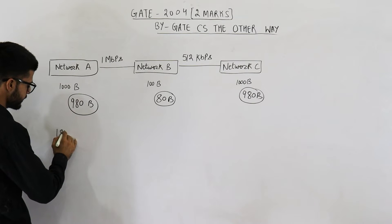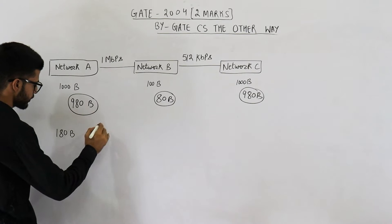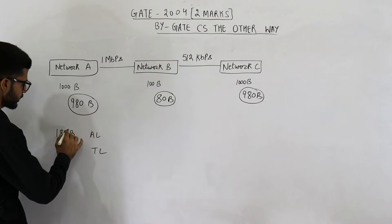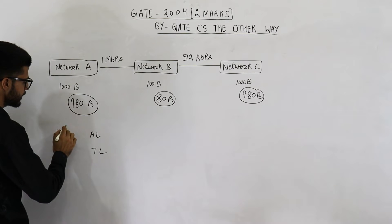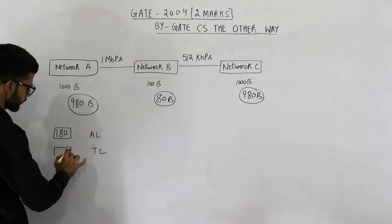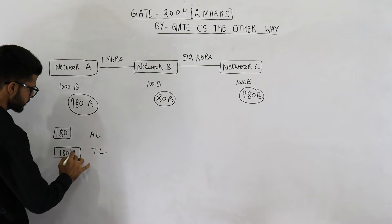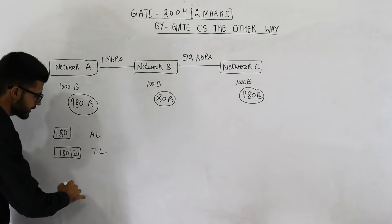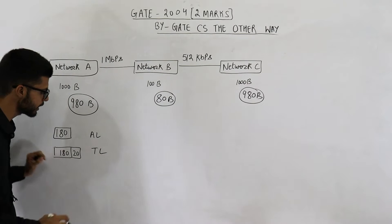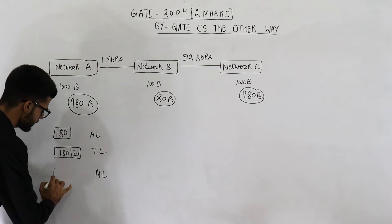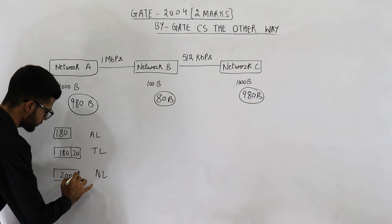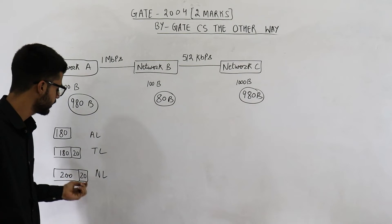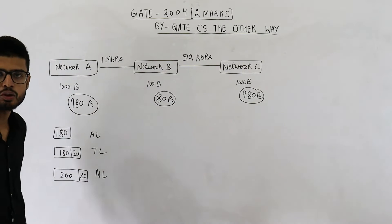They are saying: if a sender from network A wants to send a message to someone in network C, and the message is of 180 bytes, how many bytes will be delivered at the IP layer? The message is 180 bytes at application layer. These 180 bytes will be given to transport layer. At transport layer, a 20 byte header will be added, making it 200 bytes. These 200 bytes will now be given to the network layer.